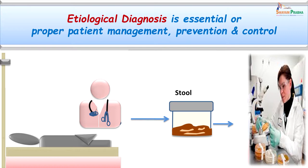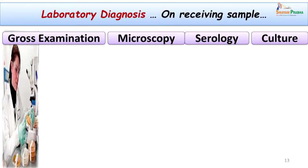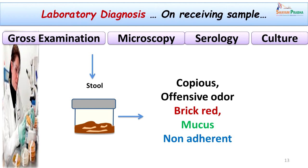Although we could now suspect amoebic dysentery, etiological diagnosis is very important and essential for proper patient management and also for prevention and control. The stool was collected from Geeta and immediately transferred to the laboratory. For lab diagnosis we have various modalities: gross examination of the stool specimen, microscopy which is the gold standard, serological tests for antigen or antibody detection, and culture of the organism.